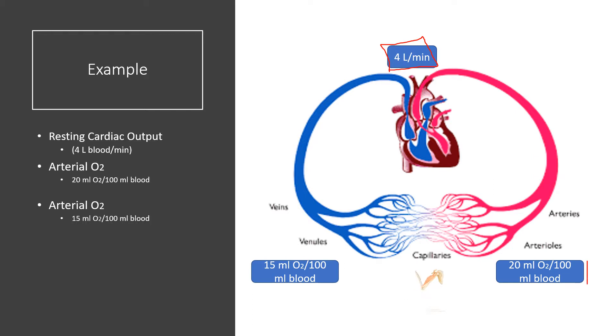We sample from the arteries and find that the concentration is 20 milliliters of O2 per 100 milliliters of blood. That means the concentration of oxygen in the blood is about 20 milliliters per 100 milliliters of blood.